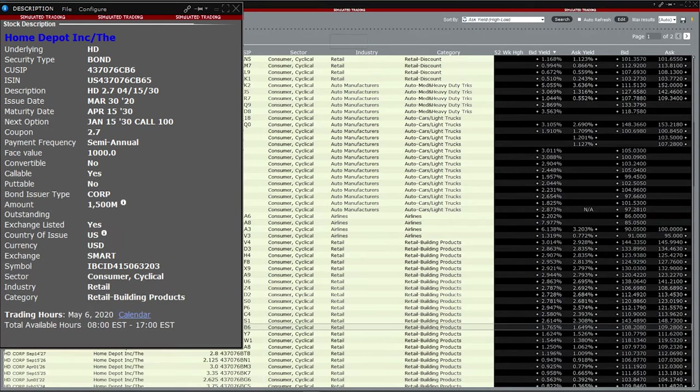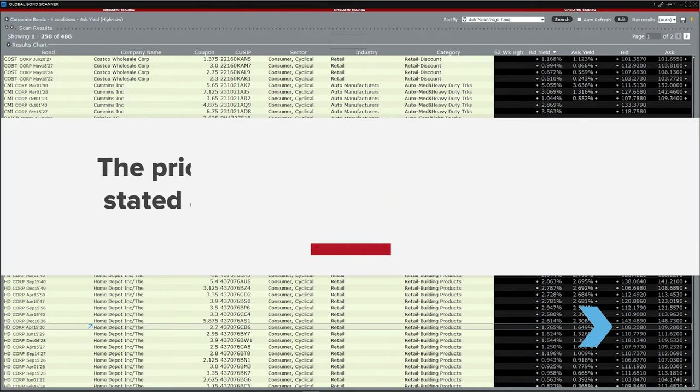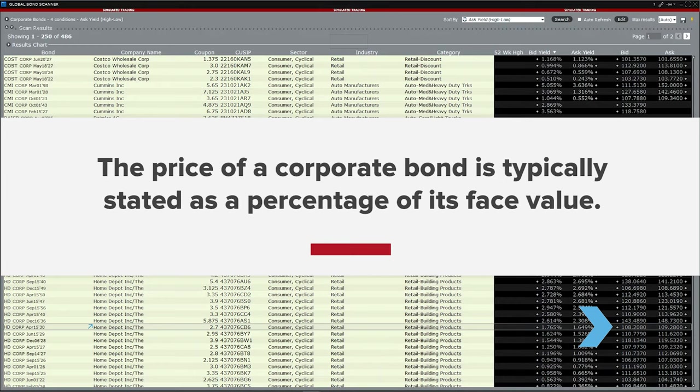Let's now take a look at the bond's price in the secondary market, which we see has now risen over 100. In general, the price of a corporate bond is typically stated as a percentage of its face value.